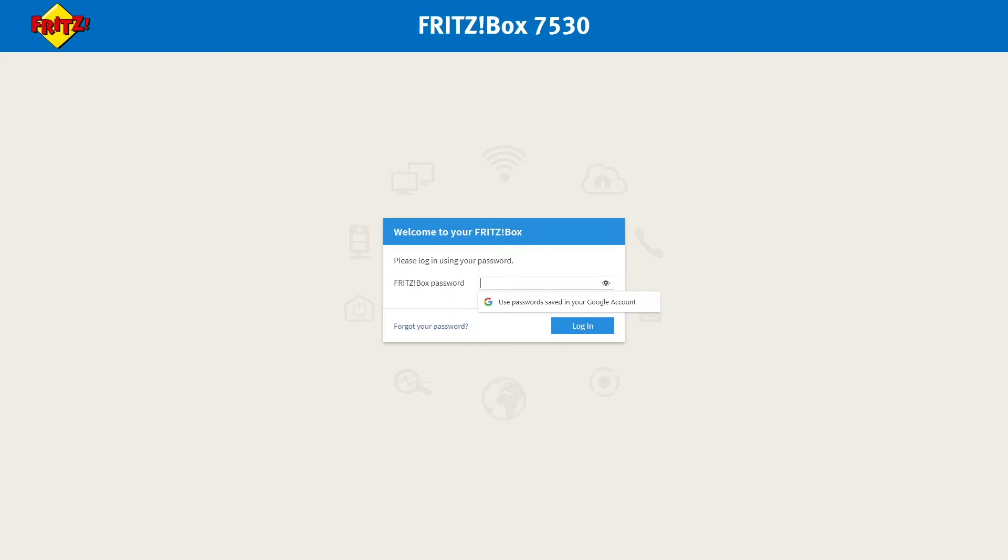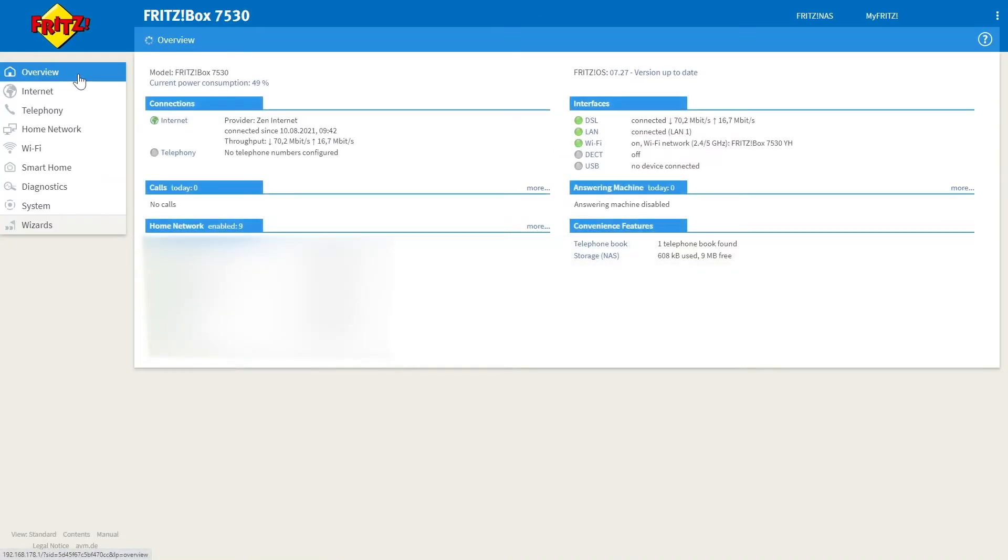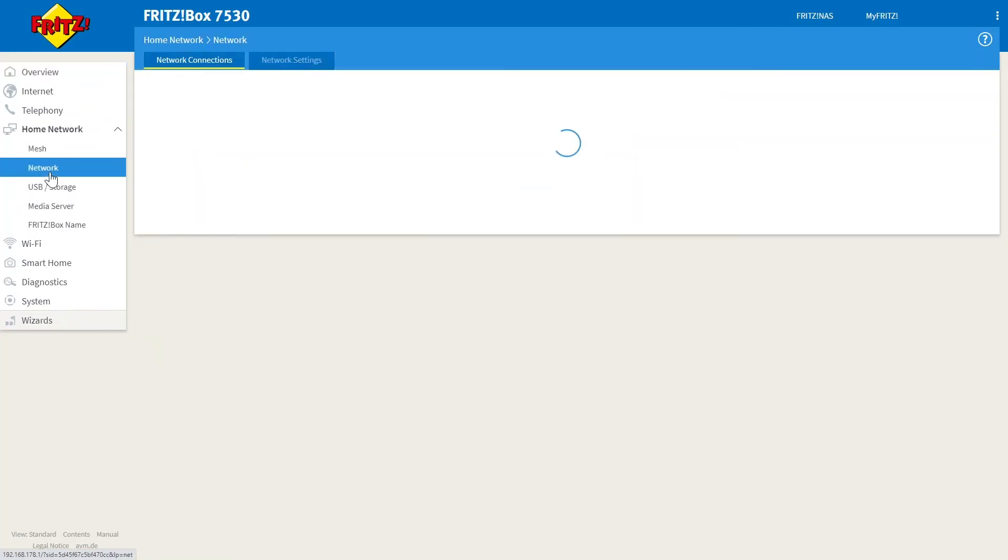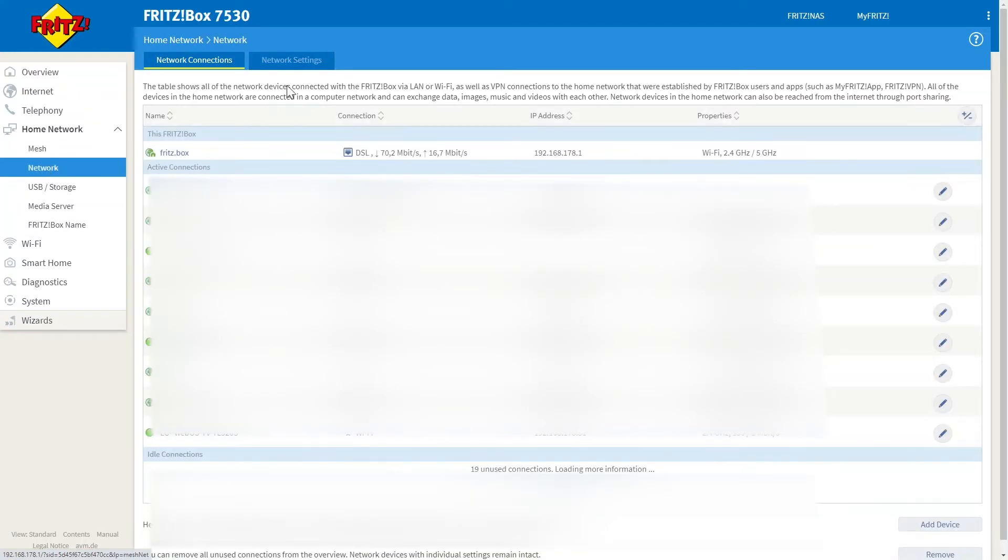Here you'll need to enter the password that you can find on the underside of your router labeled Fritzbox password and this will take you to the main page. On the left hand side you'll need to go to home network and network and then you want to click on the second tab across labeled network settings.